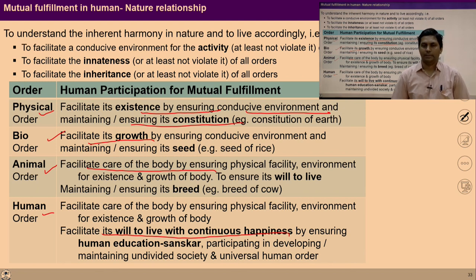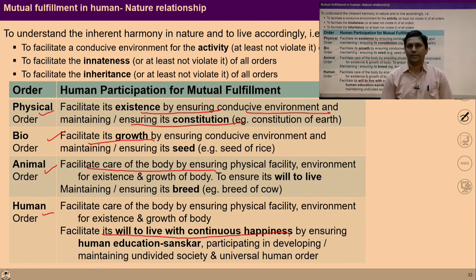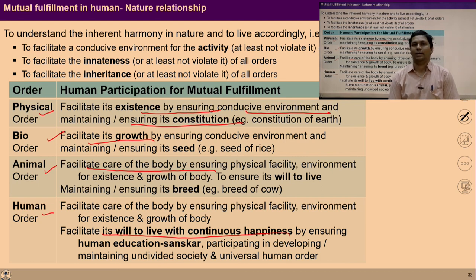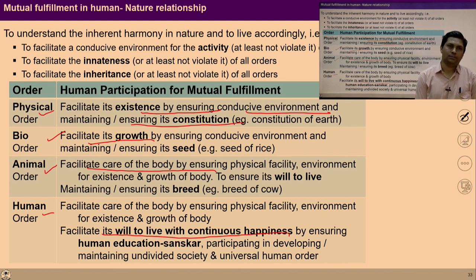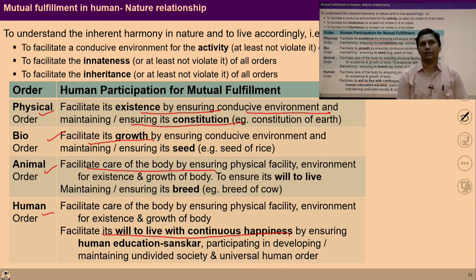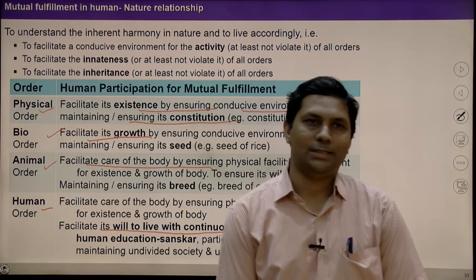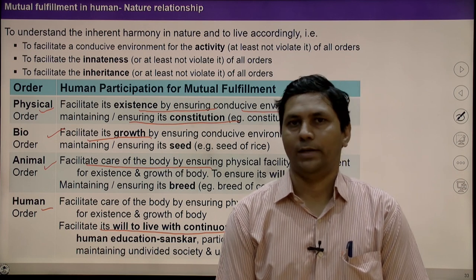To summarize: we started with production and talked about what to produce, how to produce, how much to produce, and where to produce. We saw that we should follow natural laws while designing technologies and production systems — if we do that, our production systems become ethical. In the next lecture we will talk about policies related to production. Thank you very much, have a nice day.